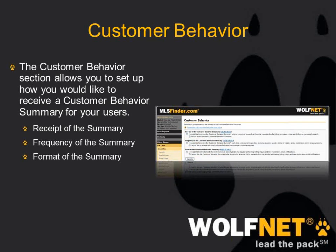The customer behavior summary is basically an email that you receive. This section controls the frequency of it, whether you want to get it at all, and how it comes. The top option will turn it on or off. The second one will dictate the frequency — whether it be every time someone signs up or just once a day with a summary of everyone that's signed up. And the format of the summary — you can either request to have it sent every time someone requests a showing or inquires about a listing, or have that delivered in a separate email.